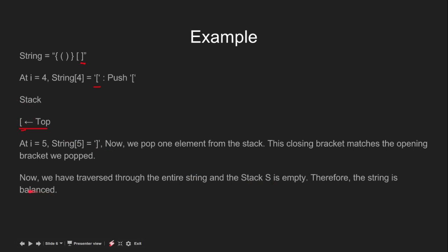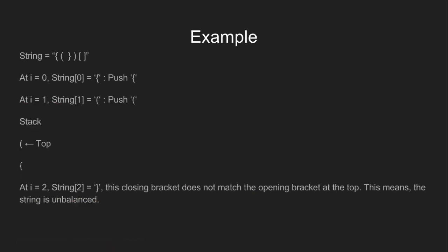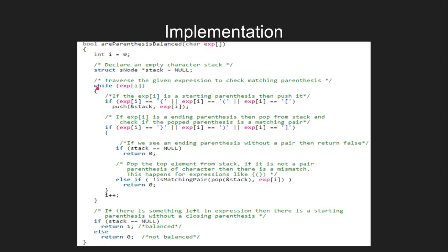Let's look at another example. Suppose we have a string where at i equal to 0 we have an opening bracket, so we push it into the stack. The stack now has a round bracket and curly bracket, with the round bracket at the top. At i equal to 2 we have a closing bracket. This closing bracket does not match with the opening bracket at the top — these two do not match. So this means the string is unbalanced.